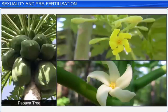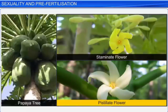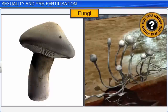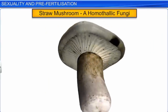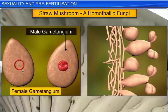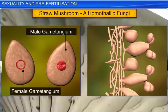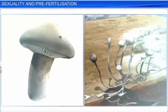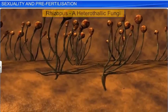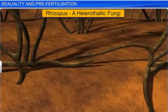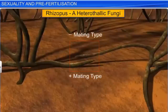Papaya, on the contrary, is a dioecious plant that bears staminate and pistillate flowers on different trees. Interestingly, we come across bisexual and unisexual organisms even in fungi. Bisexual fungi such as the straw mushroom bear the male and female gametangium — the plus and minus mating type — on the same thallus, and are known as homothalic fungi. This is in contrast to heterothalic fungi such as Rhizopus, which bears the male and female gametangium on different thalli.